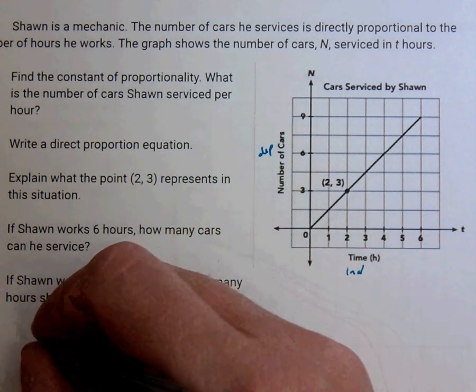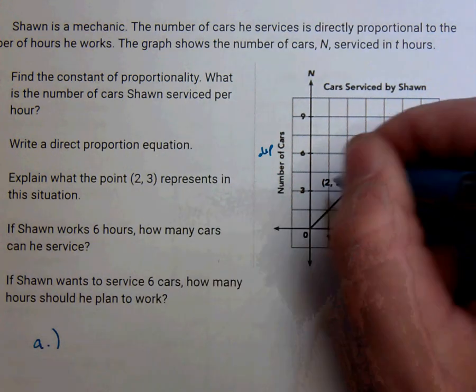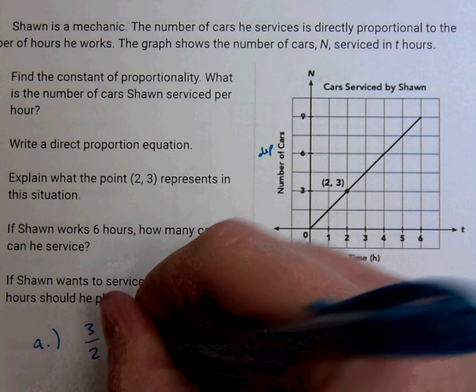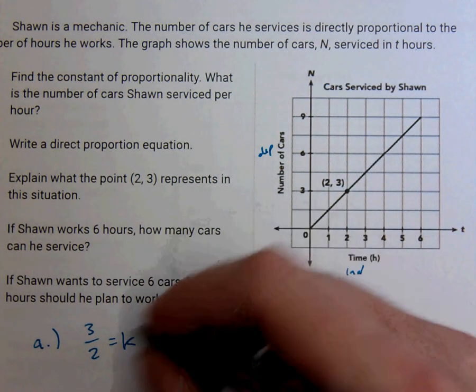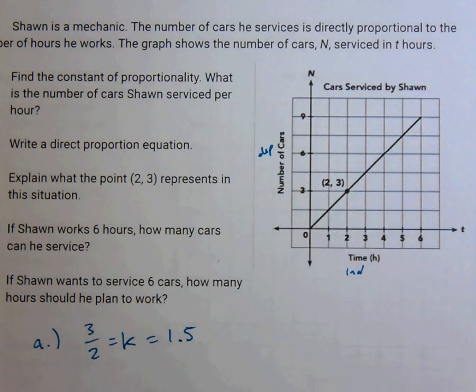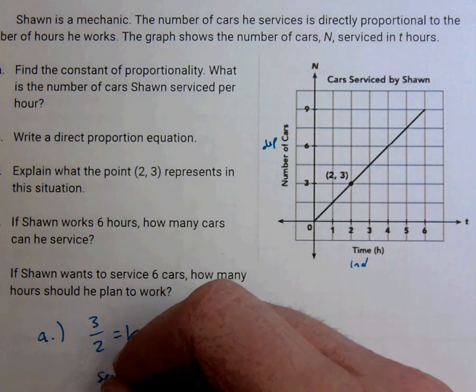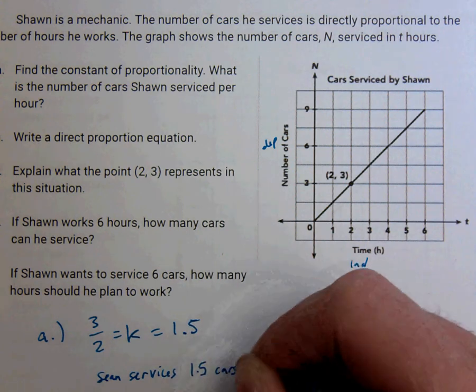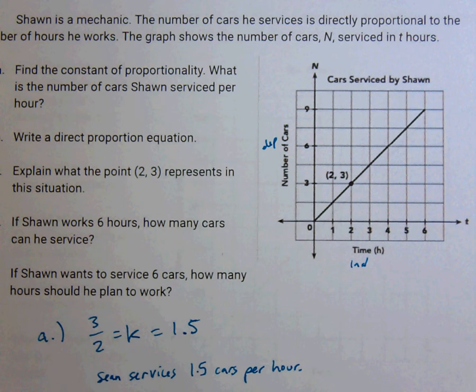So for A, let's do, so whatever the second one is divided by the first. 3 divided by 2. That is his constant of proportionality. You could say k is equal to 3 halves or 1.5. They mean the exact same thing. And so if we wanted to, this means that Sean services 1.5 cars per hour. That's the answer to A.